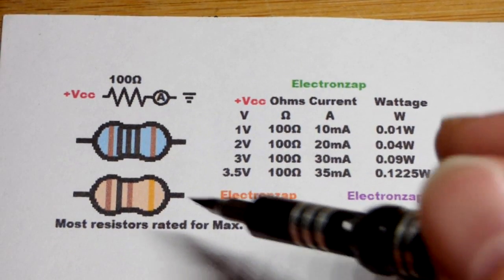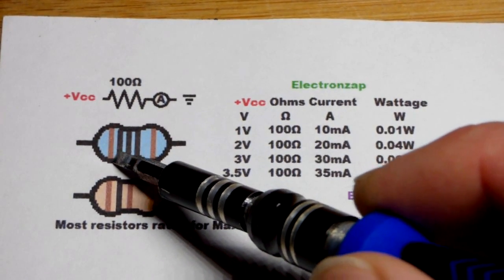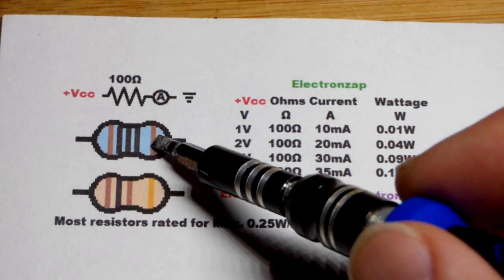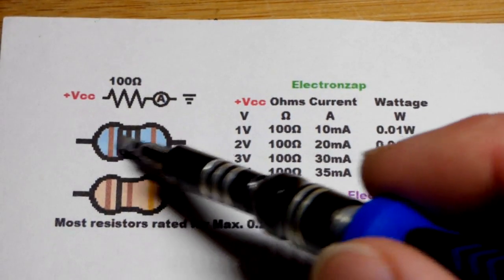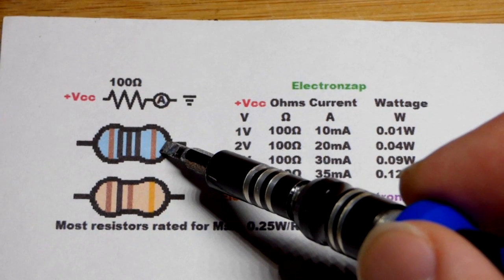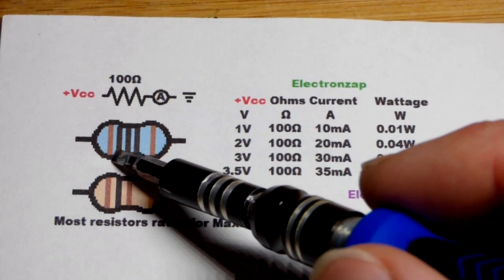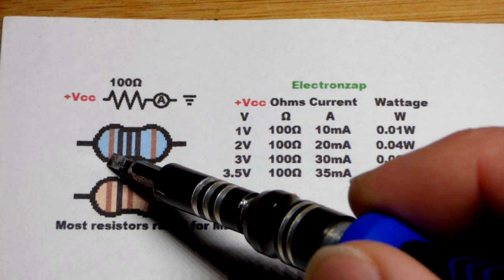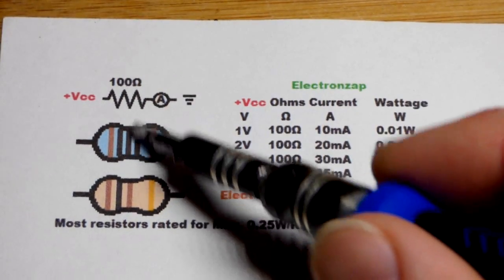Quarter watts are by far the most common. When it comes to the color code, we'll do the blue one first. Sometimes it's hard to tell where the tolerance band is. This means whatever value we have, you can expect 1% higher or lower from these blue resistors. We got brown for 1, black for 0, and then black for 0.